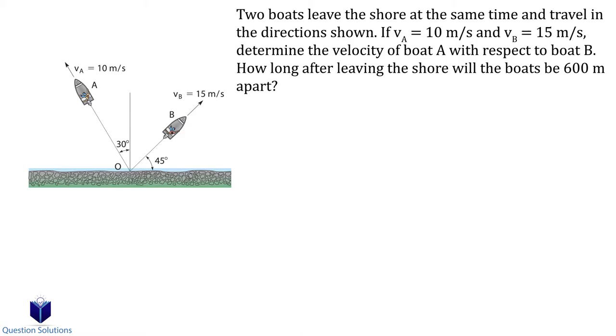In this problem we need to figure out the relative velocity and how long it will take for the boats to be 600 meters apart from each other. We will assume up is positive and to the right is positive.